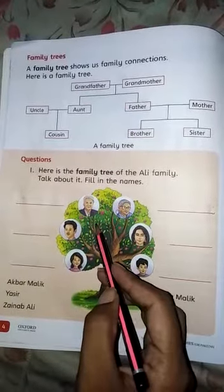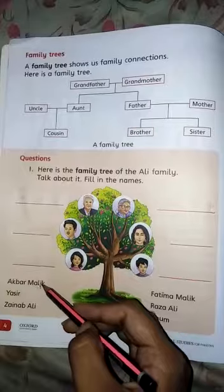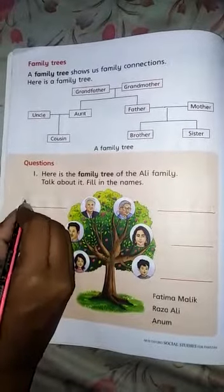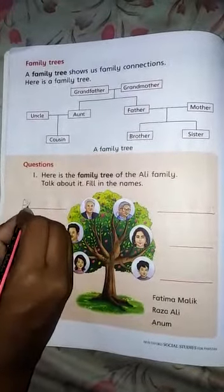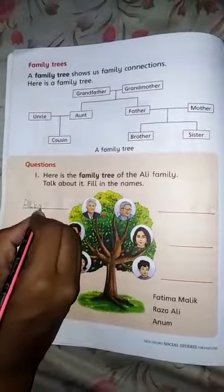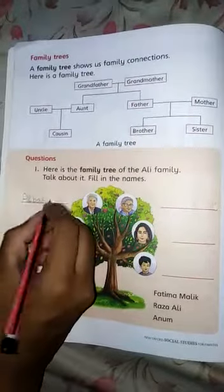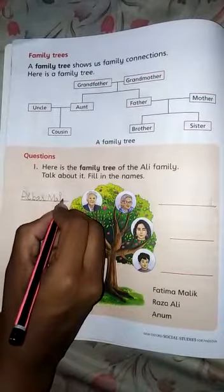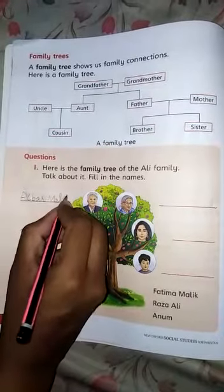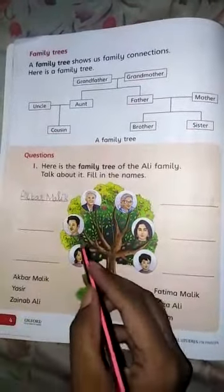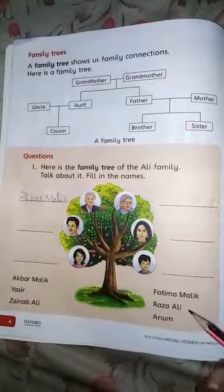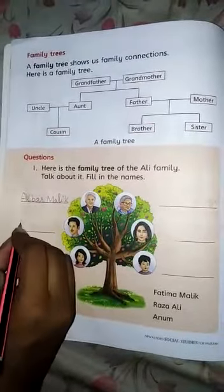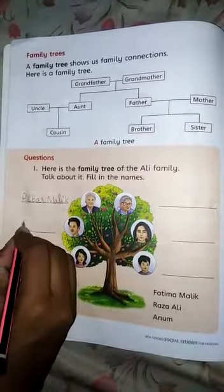So the first one is Akbar Malik. So we will write Akbar Malik here. Next is Raza Ali. So we will write Raza Ali.